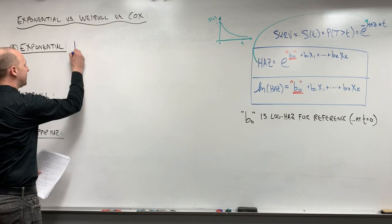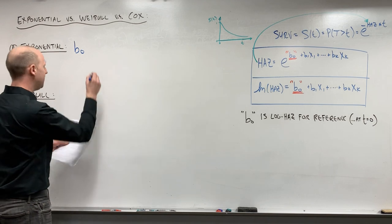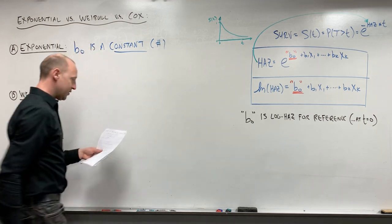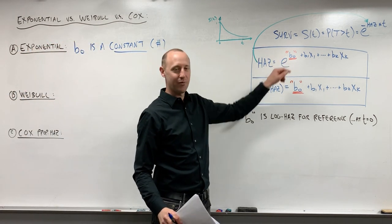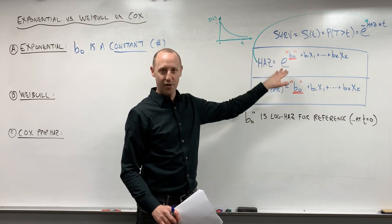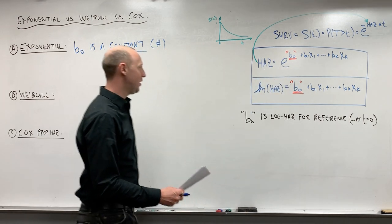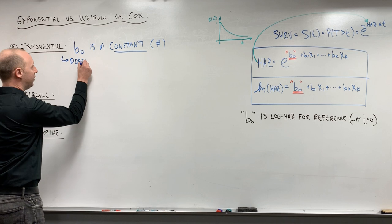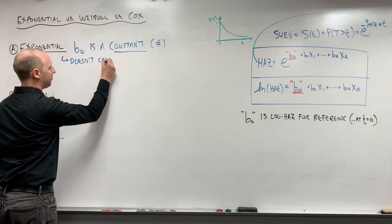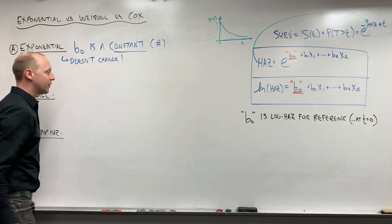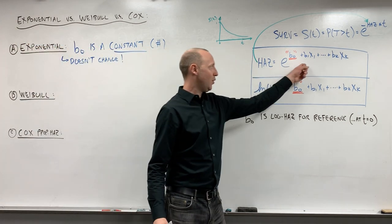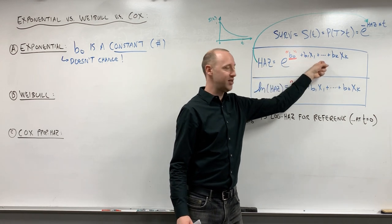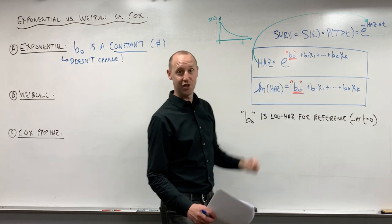In the exponential model, this b0, this intercept term, it's a constant. So it's just a number. So in that sense, if you can kind of take the quotes and the red line off of it, it looks just like all the other regression models we've seen before. b0 is just some constant or some numeric value. It doesn't change. So you can see here there's no t, there's no time in this function. So the hazard is just going to be a function of the values of x but not time at all, meaning the hazard is constant.